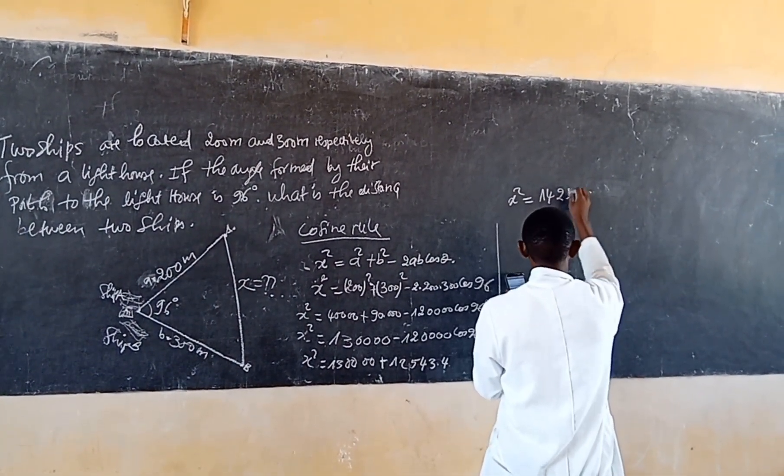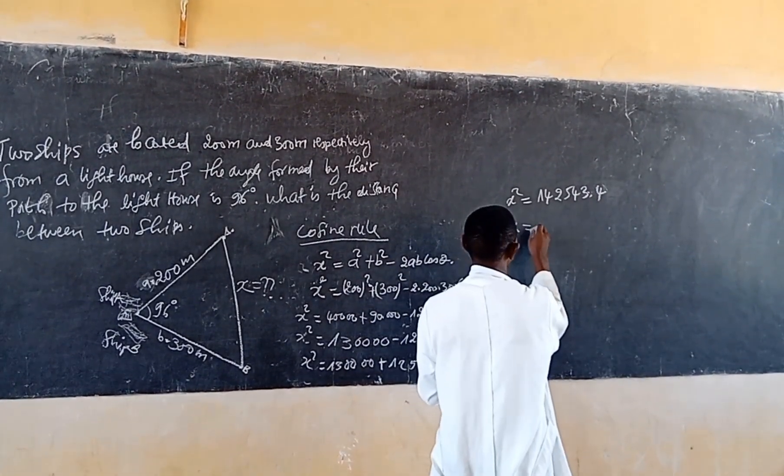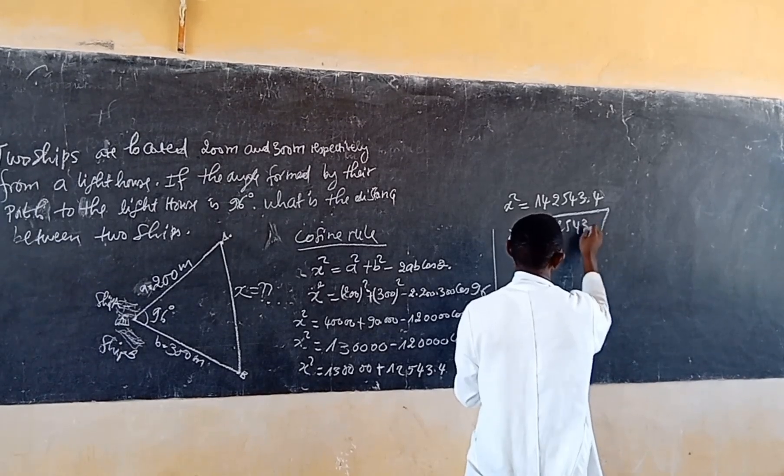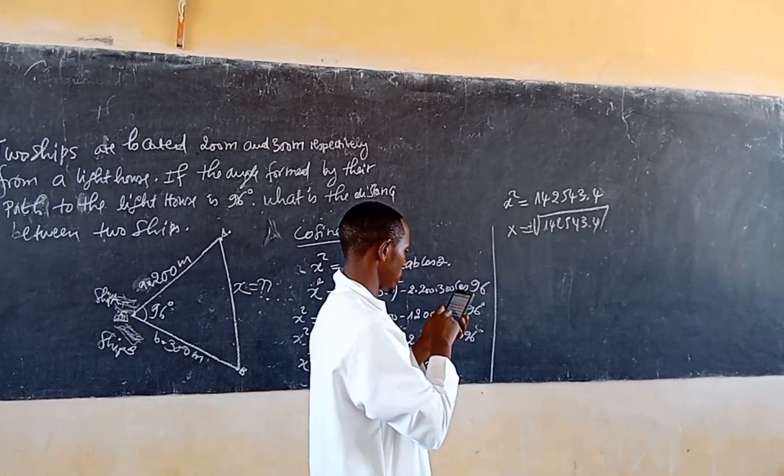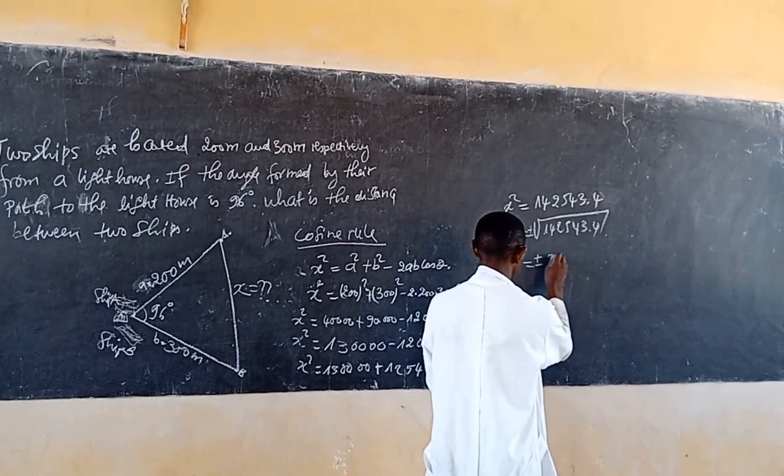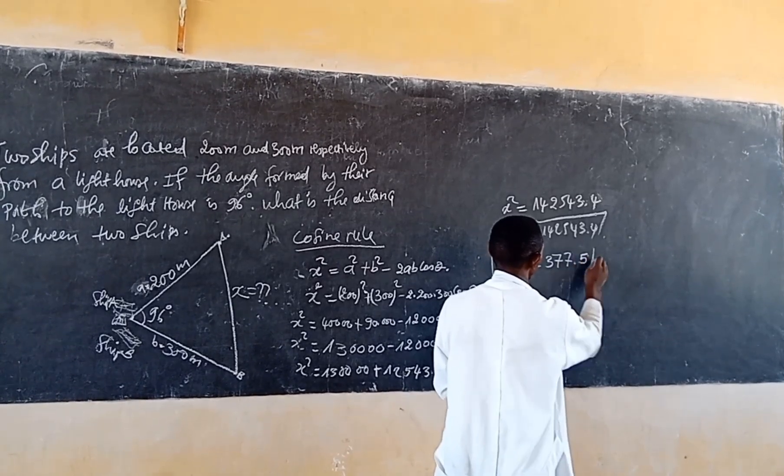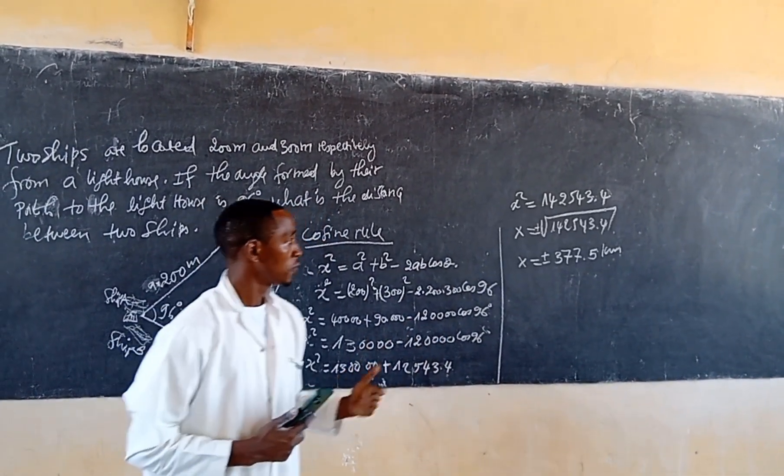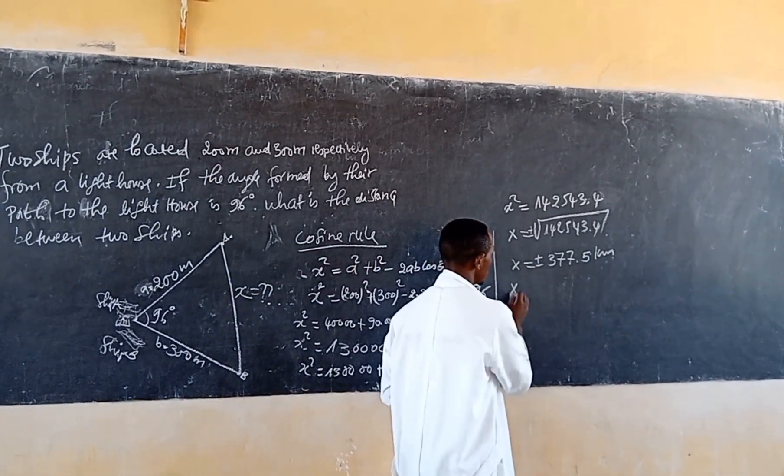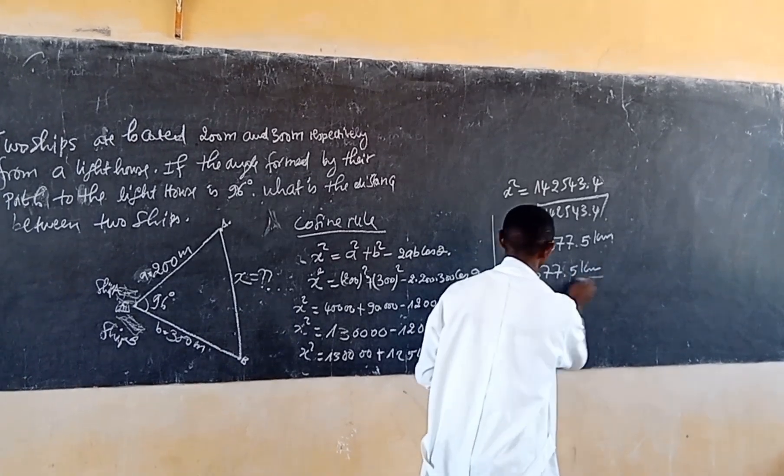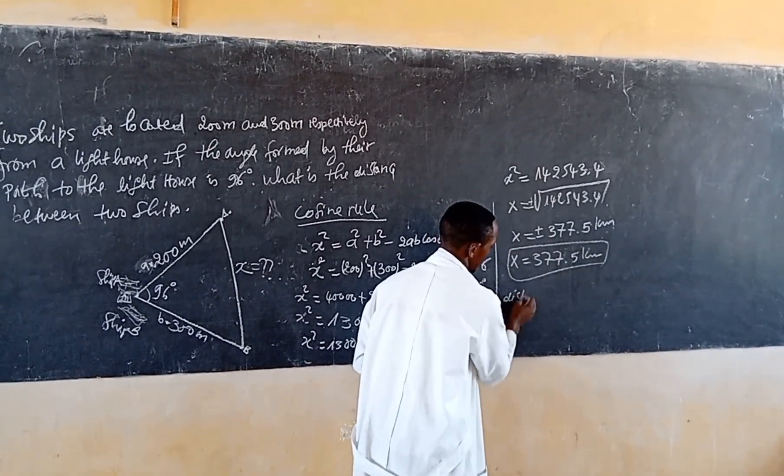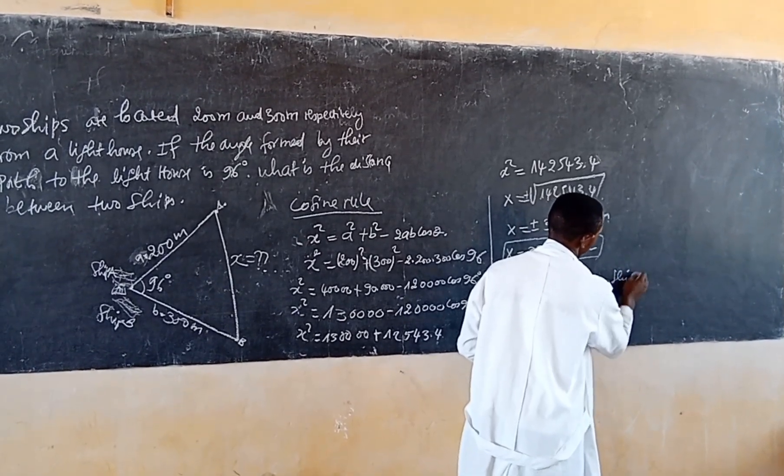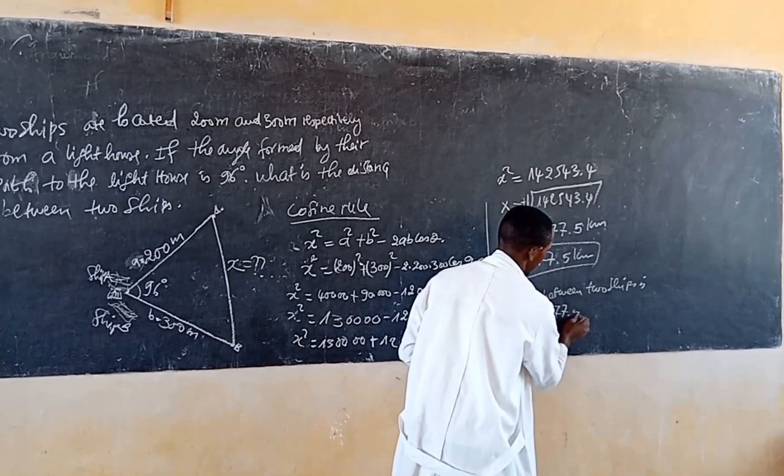Then the value of x squared is equal to 142546.24. So the square root of that is x equals plus or minus 377.54 meters. So there is no distance which is negative, because the distance is a scalar. So the distance between two ships is 377.54 meters. Then we conclude that distance between two ships is 377.25 kilometers.